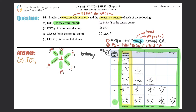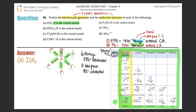Six things means an octahedral electron pair geometry, so EPG is octahedral. Now checking lone pairs on the central atom — iodine has zero lone pairs. With six things and zero lone pairs, the molecular structure is also octahedral. So for part a, both the electron pair geometry and molecular structure are octahedral.